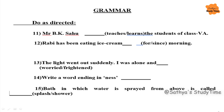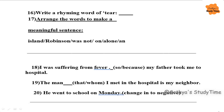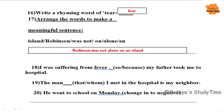Next we'll see grammar. Mr. B.K. Shahu dash — the answer is 'teaches' the students of Class 5A. Next one: Rabbi has been eating ice cream since morning. Next question: the light went out suddenly, I was alone and frightened. Write a word ending in '-ness' — the answer is 'awareness'. A bath in which water is sprayed from above is called a shower.